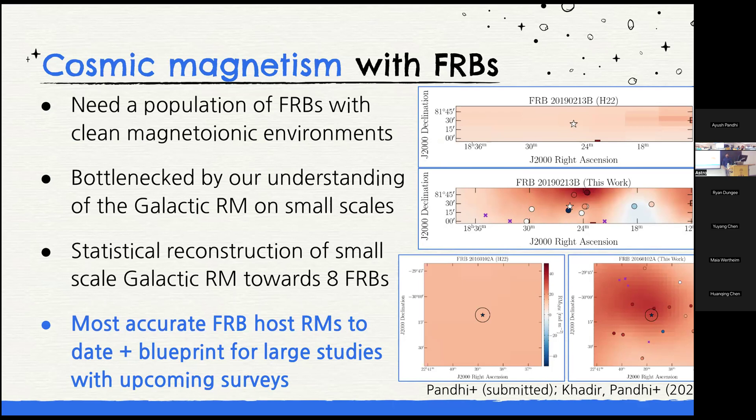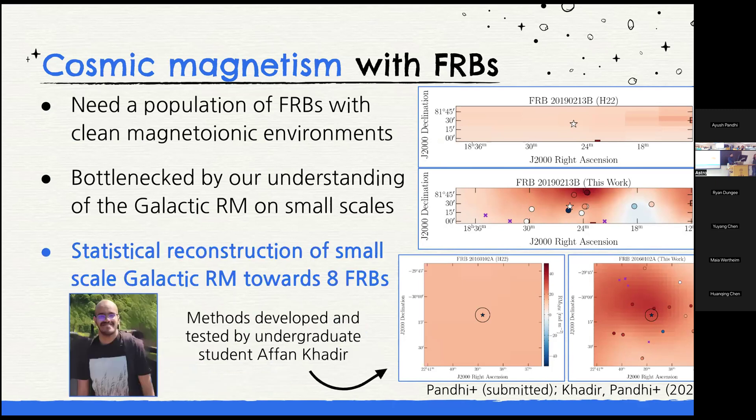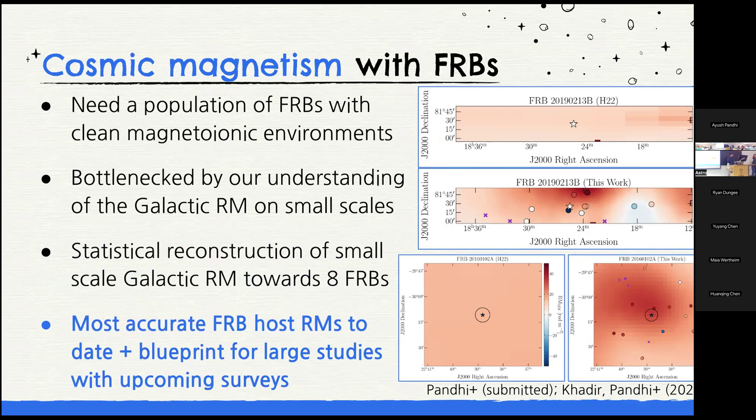From the sample, do you know roughly the rate at which we detect an FRB with a rotation measure over a thousand? Just based on processing data in the time backend, maybe a few per year.